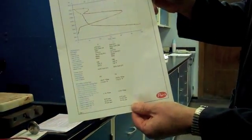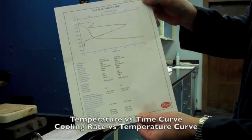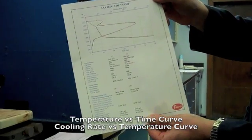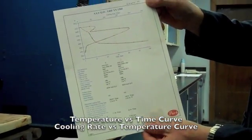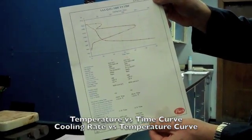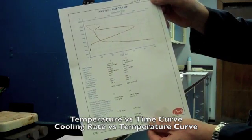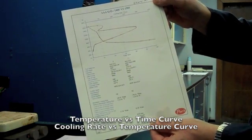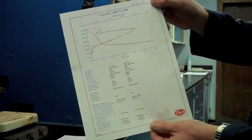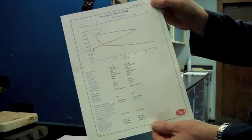The finished test actually generates two curves. One is a temperature versus time curve, which is what we commonly refer to as a cooling curve. The other is a plot of cooling rate versus temperature. Both curves are generated by our software package. These are what we typically send out to a customer when we analyze their samples.